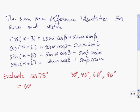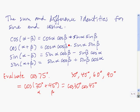So cosine of 75 degrees is the cosine of 30 degrees plus 45 degrees. To evaluate this, we're going to use the second identity and expand it. Cosine of alpha plus beta — where alpha is 30 degrees and beta is 45 degrees — equals cosine of alpha times cosine of beta, so cosine of 30 degrees times cosine of 45 degrees, minus sine of alpha times sine of beta, so sine of 30 degrees times sine of 45 degrees. We know that cosine of 30 degrees is √3/2, and cosine of 45 degrees is √2/2.